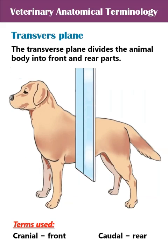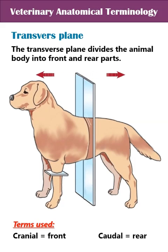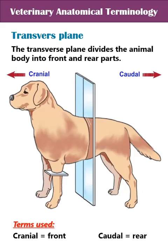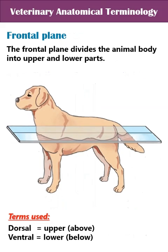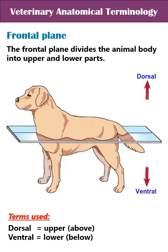The transverse plane divides the animal body into front and rear parts. Cranial means in the direction of the head, while caudal is located in the direction of the tail. The frontal plane divides the animal body into upper and lower parts. Dorsal means towards the back, while ventral is directed towards the belly or the lower part.